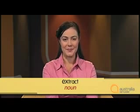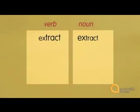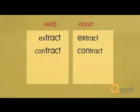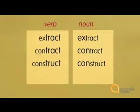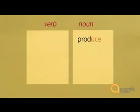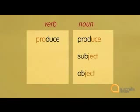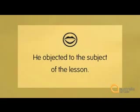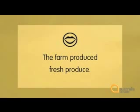This pattern — first syllable emphasis for the noun form and second syllable emphasis for the verb form — is repeated with other words: 'to exTRACT' and 'an EXtract,' 'to conTRACT' and 'a CONtract,' 'to conSTRUCT' and 'a CONstruct.' We also have 'PROduce' (that you eat) and 'to proDUCE' (to make), and 'SUBject' and 'OBject' as nouns, but 'subJECT' and 'obJECT' as verbs. Try reading these sentences: 'He objected to the subject of the lesson.' 'The farm produced fresh produce.' So you can see how stress in words can change meaning.